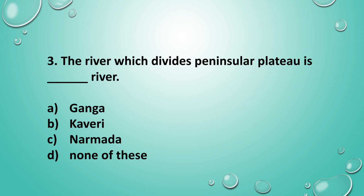Question 3: The river which divides the peninsular plateau is the ___ river. The answer is option C — Narmada.